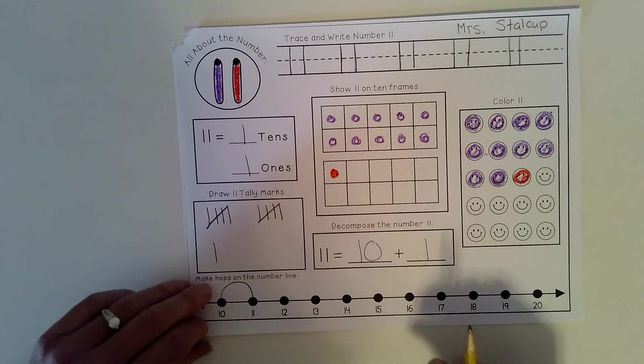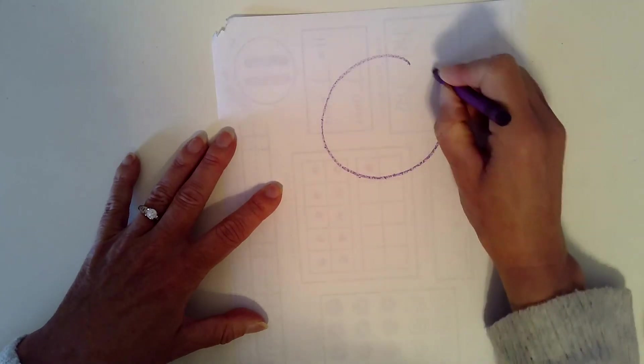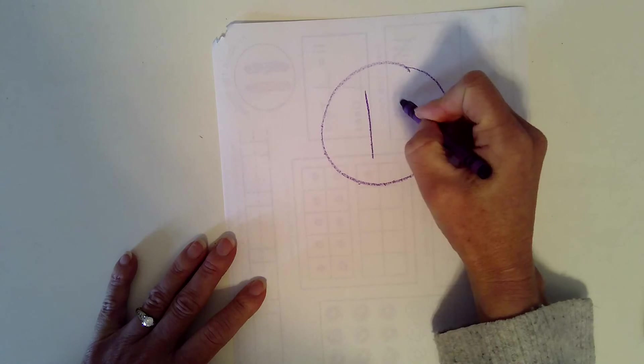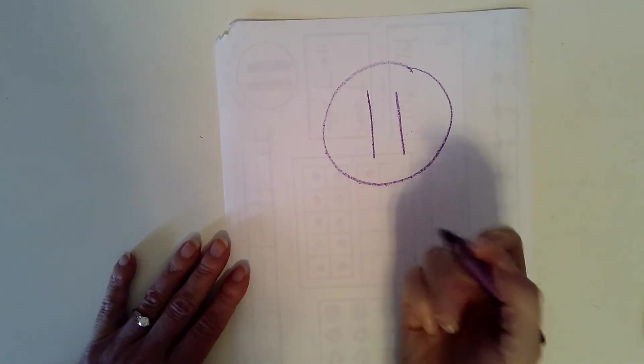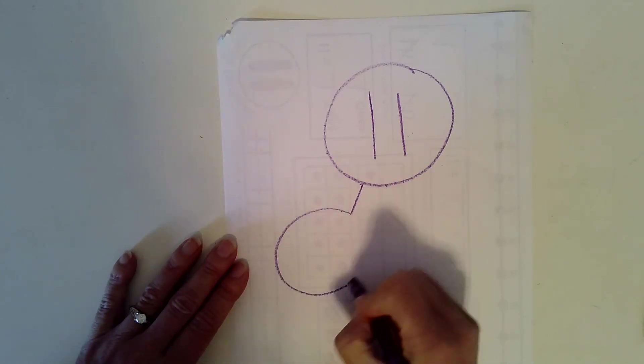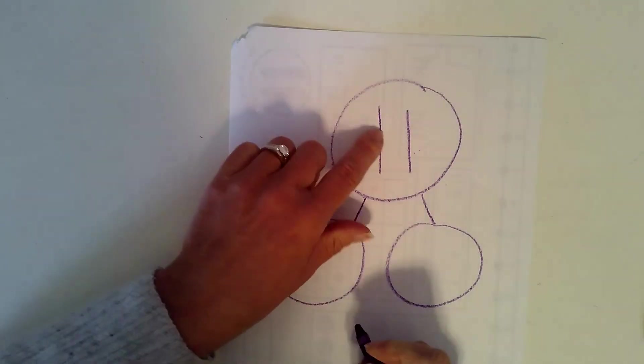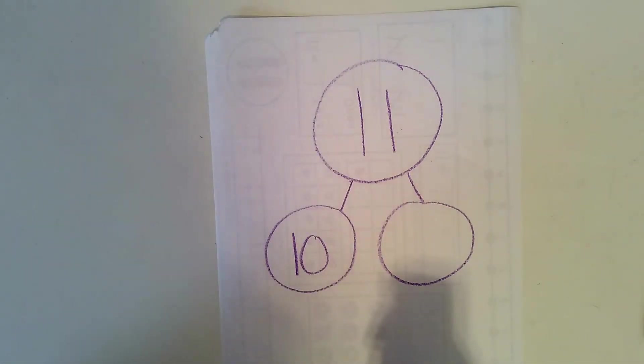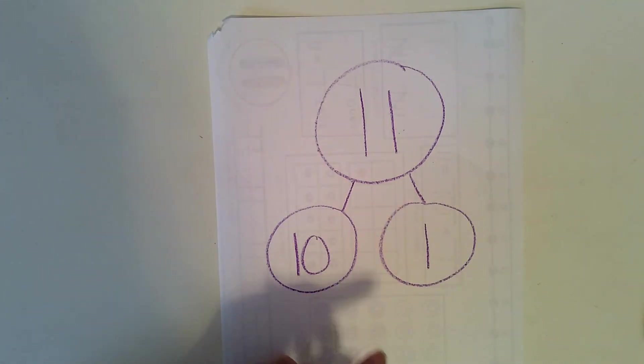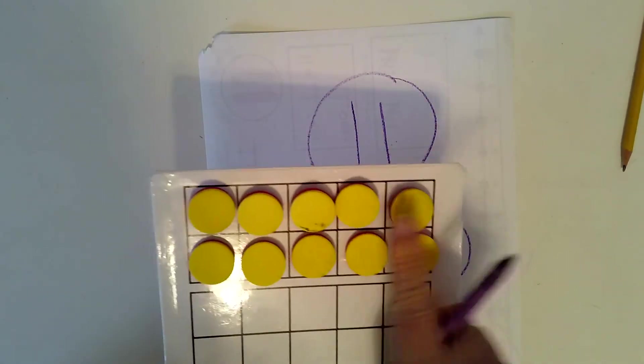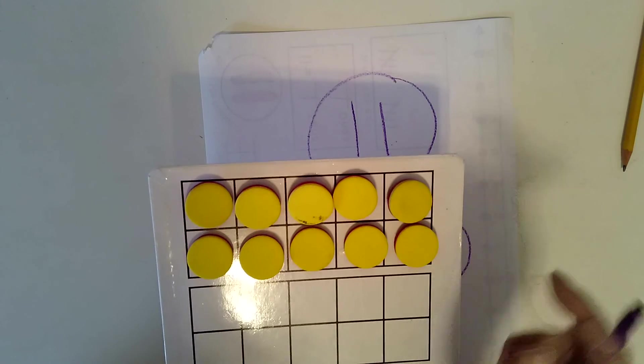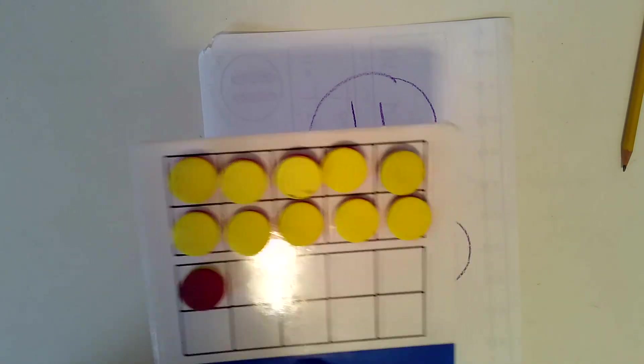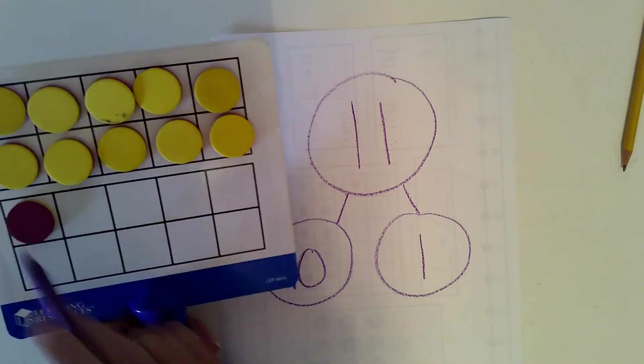So the last thing we're going to do is we're going to turn our paper over, and on this side, we are going to make a number bond. On the top is a circle, and 11 is our whole number. So I'm going to put the number 11 in there. And then with the number bond, we divide the number into parts. So what part does this digit stand for? 10. And what part does this digit stand for? 1. You should have a number bond that looks like this, because 11 is 1 ten and 1 one. 10 and 1 make 11.